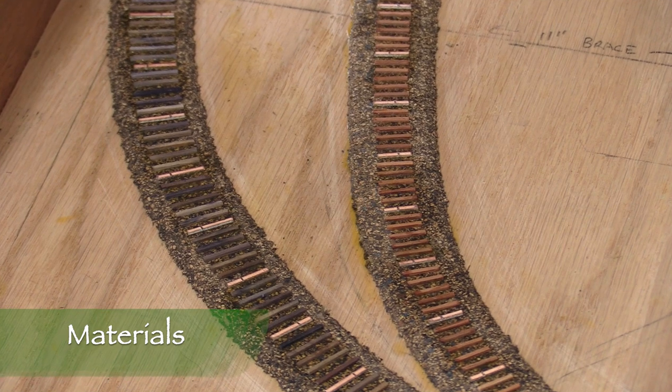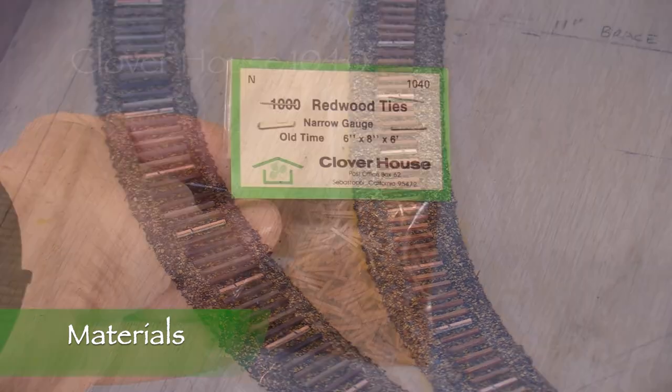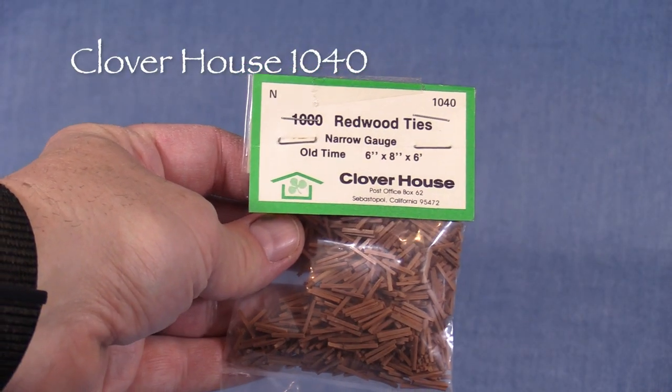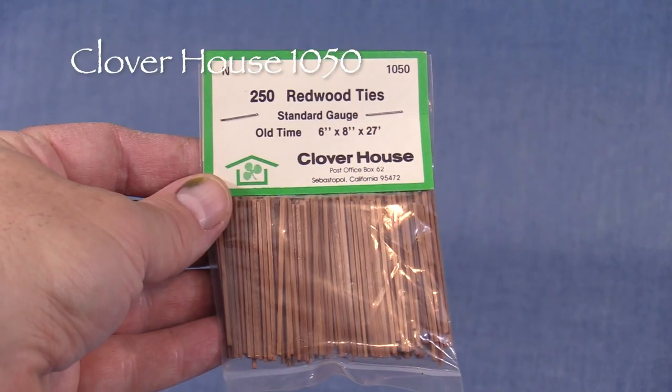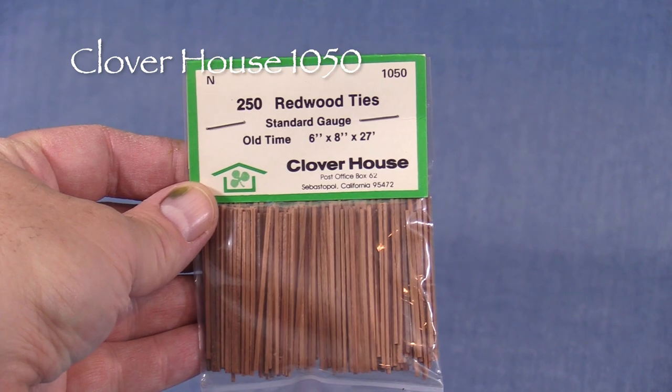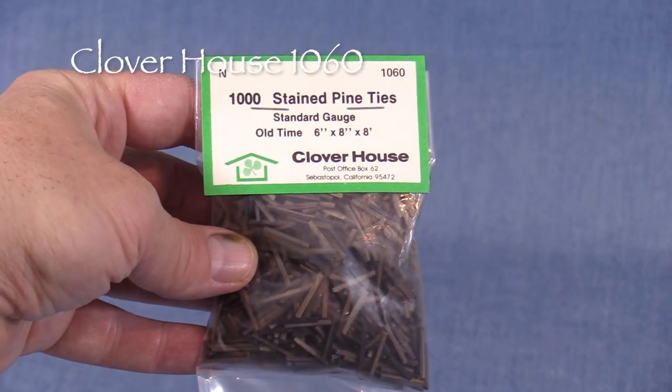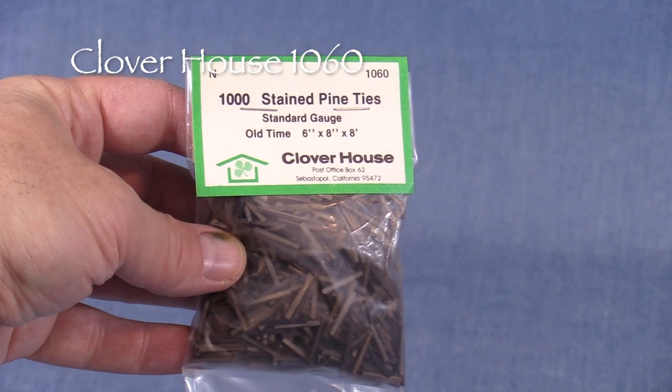I'll be using several different types of wood ties from Clover House. Narrow gauge ties will be used for the NN3 track work. Turnout ties will be used for the turnouts and cut to length as needed. Standard gauge ties will be used for the standard and dual gauge track.